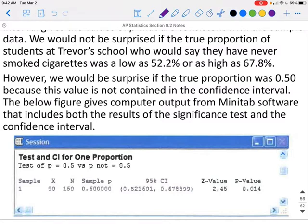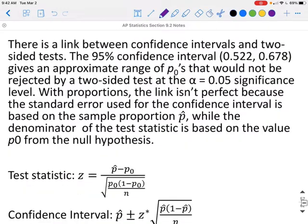However, we would be surprised if the true proportion was 50% because this value is not contained in the confidence interval. The figure below gives computer output from Minitab software that includes both the results of the significance test and the confidence interval. Our sample P value is 0.60, our confidence interval is given, the z value and the P value. Based on the P value, we rejected the null hypothesis, but from the interval we can see why—because that 50% does not fall in our interval.